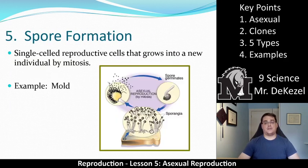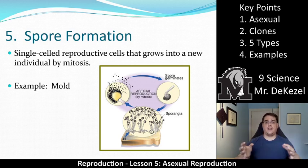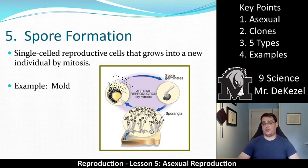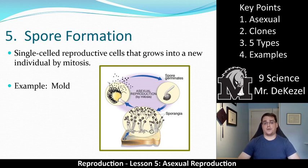The last type is spore formation. Things like mold and fungus produce little packages of spores that they spread, and each spore is able to reproduce on its own and eventually make its own colony. Spores often get carried away by wind or by animals eating or rubbing against the source. It is essentially mitosis starting from a very small point, and then they spread themselves out purposely.